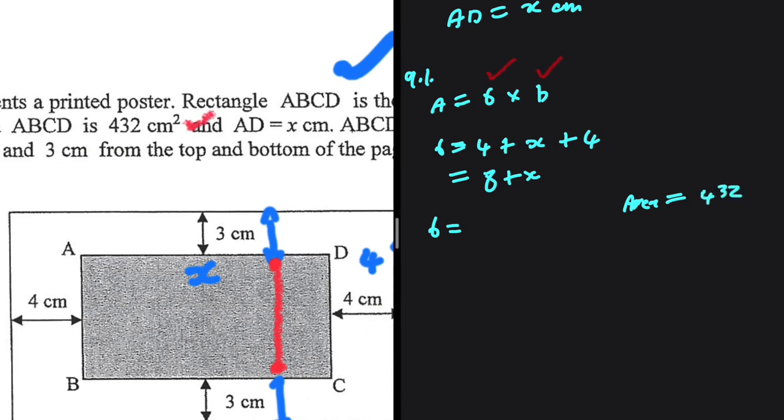So we have 432. The formula for that area would be AD multiplied by DC. This is equal to 432. But we know that AD is x. So we have DC being equal to 432 divided by x basically. That is why we are given the area of ABCD. Right? So here we have 432 divided by x.